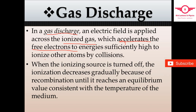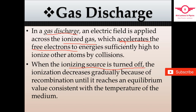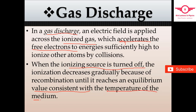Once ionization is done, we can turn off the process of ionization, and then ionization will gradually decrease. In the medium at equilibrium, the ionization value will be consistent with the temperature of the medium. We can then check the plasma criteria to determine whether we have successfully created a plasma.